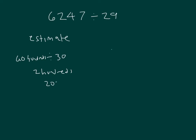That's two-hundred. So think about that as we are working through our problem and with our actual answer. Go in the hundreds place — put the two in the hundreds place. Two times twenty-nine is fifty-eight. Sixty-two minus fifty-eight is four.